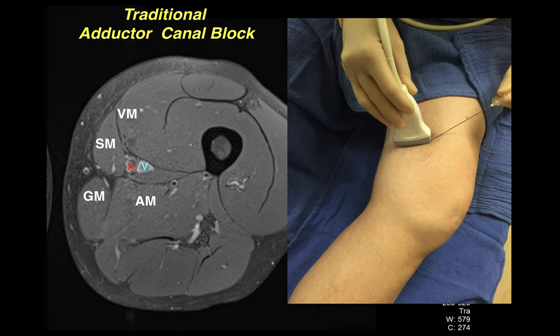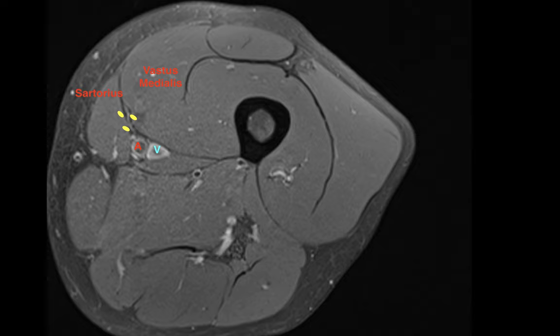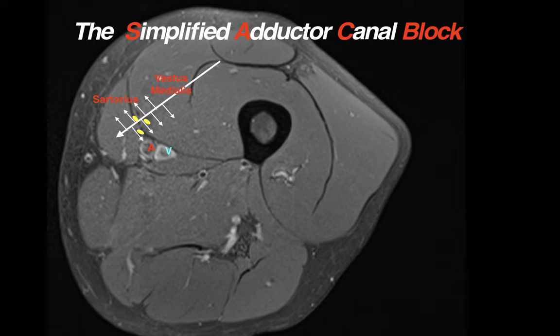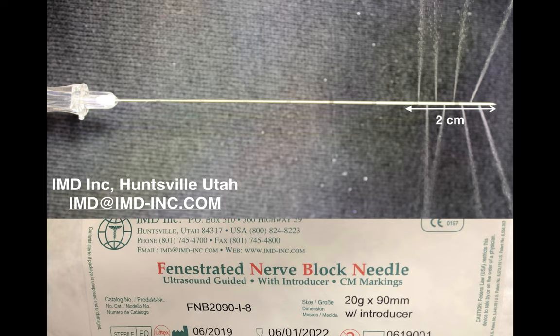To review, the traditional adductor canal block requires a perivascular injection where the superficial femoral artery may be deep and challenging to visualize. By contrast, the simplified adductor canal block is performed by passing a fenestrated needle across the tissue plane separating the vastus medialis and sartorius muscles in the distal third of the thigh. The fenestrated needle used to perform the block has a pencil point design to assure equal outflow during injection from all eight side ports extending two centimeters from the tip of the needle.